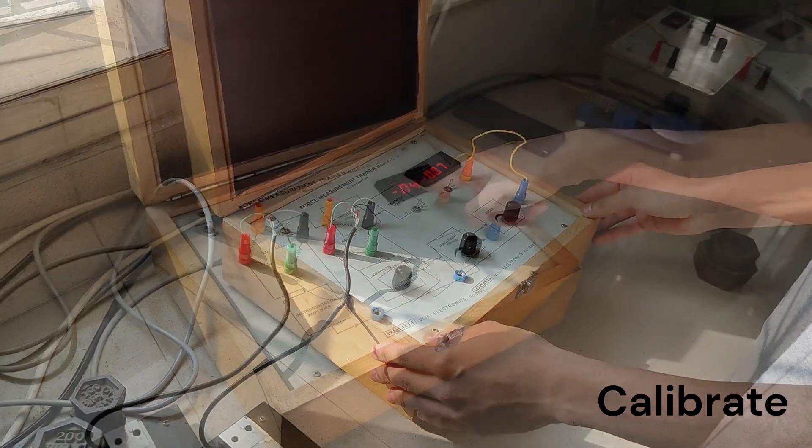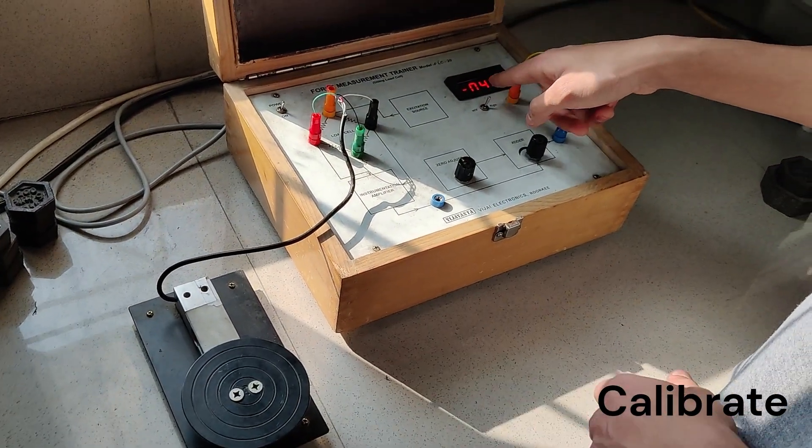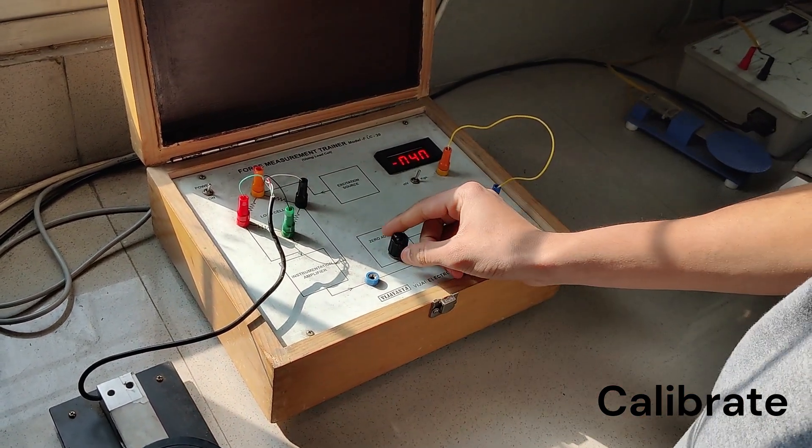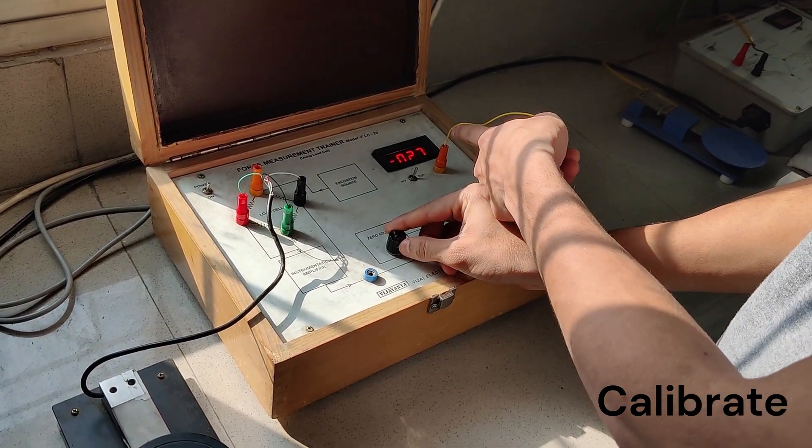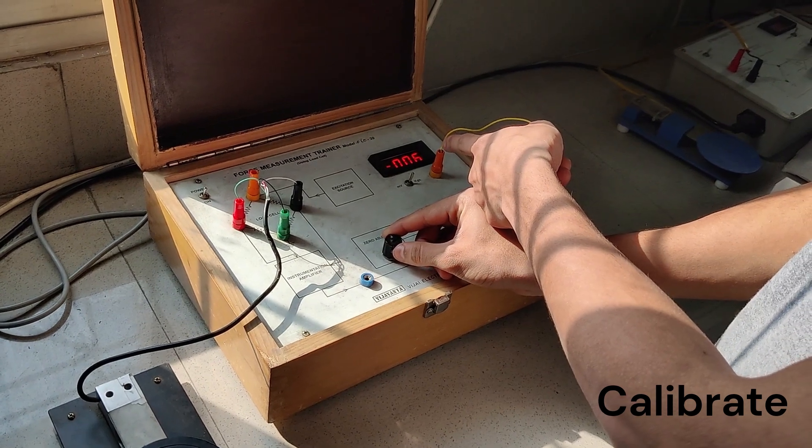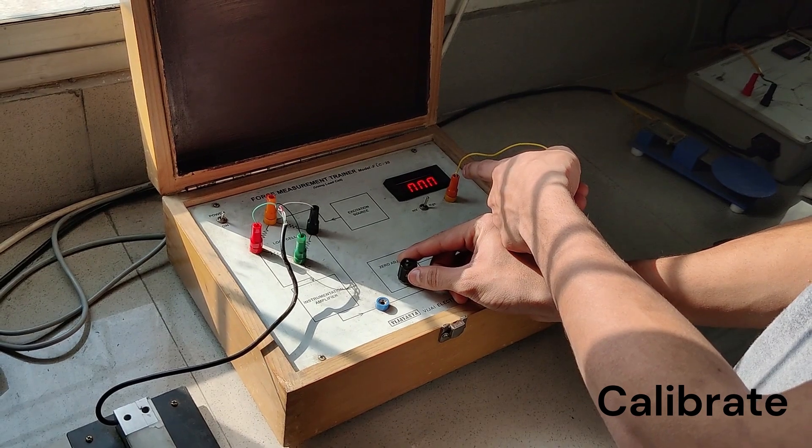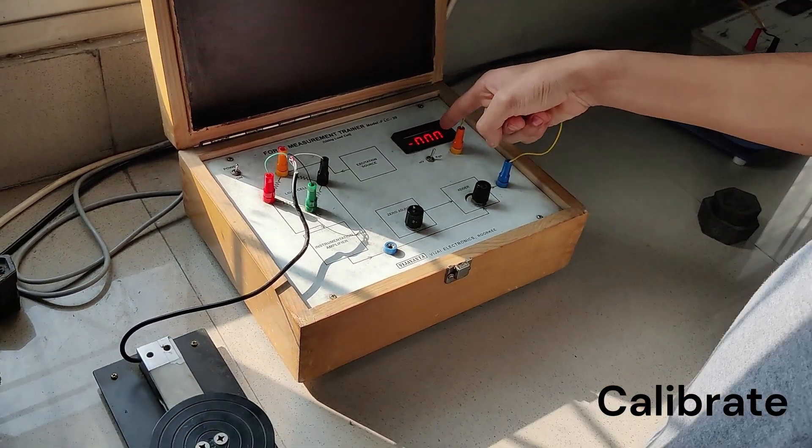Now the power is on. As can be seen, even though there is no load applied, the reading is non-zero. So we will zero adjust it by turning the zero adjust knob. Turn it until the reading is zero. Now it is zero adjusted.